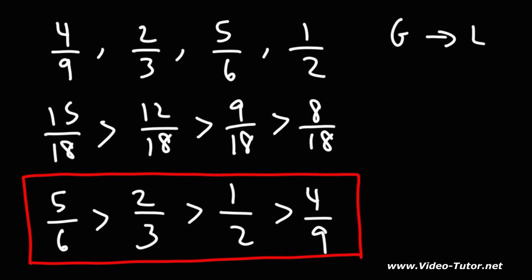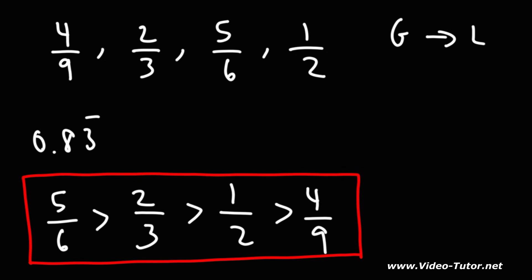Now if you're allowed to use a calculator, you can simply get the decimal value of each fraction and do it that way, but let's use the calculator to confirm our answer. 5 over 6 is 0.83 repeating. 2 divided by 3 is 0.6 repeating. 1 half is 0.5, and 4 over 9 is 0.4 repeating. And you can see this makes sense: 0.8 is greater than 0.6 or 0.67, which is greater than 0.5, and that's greater than 0.44.